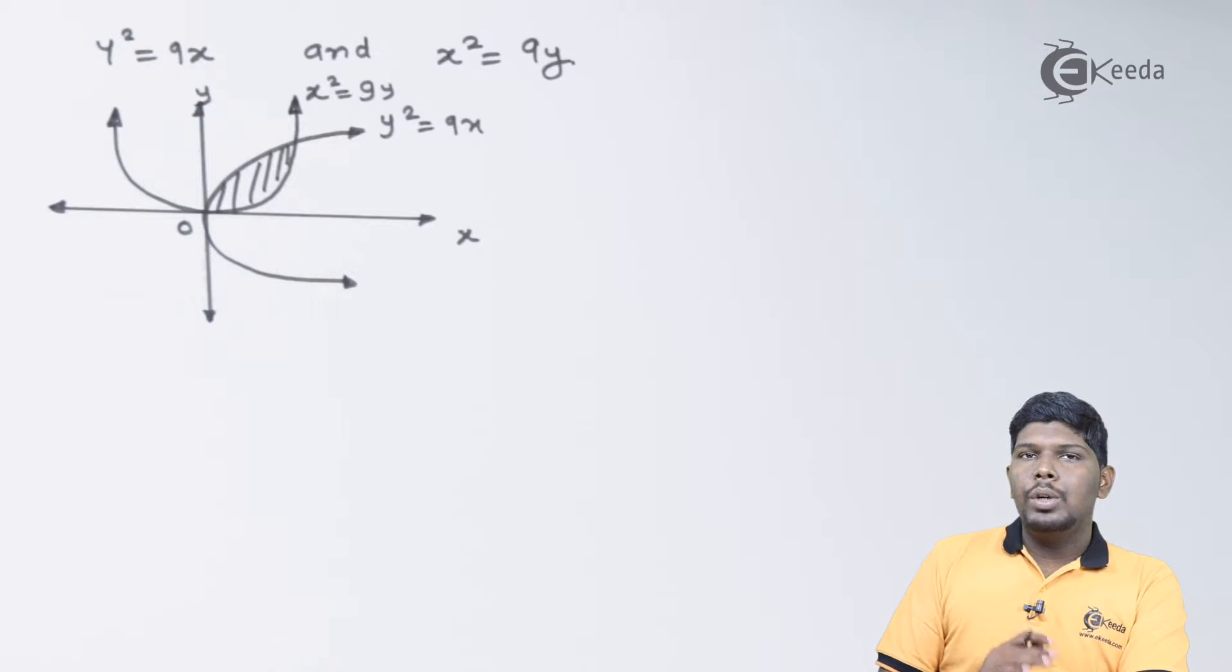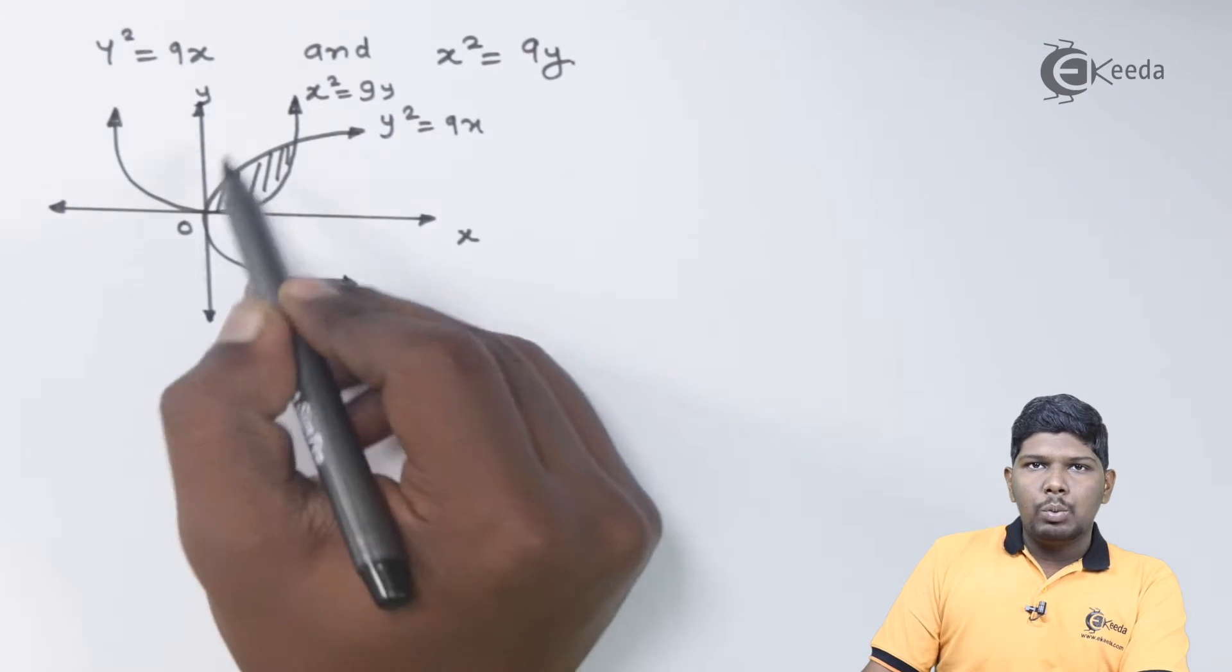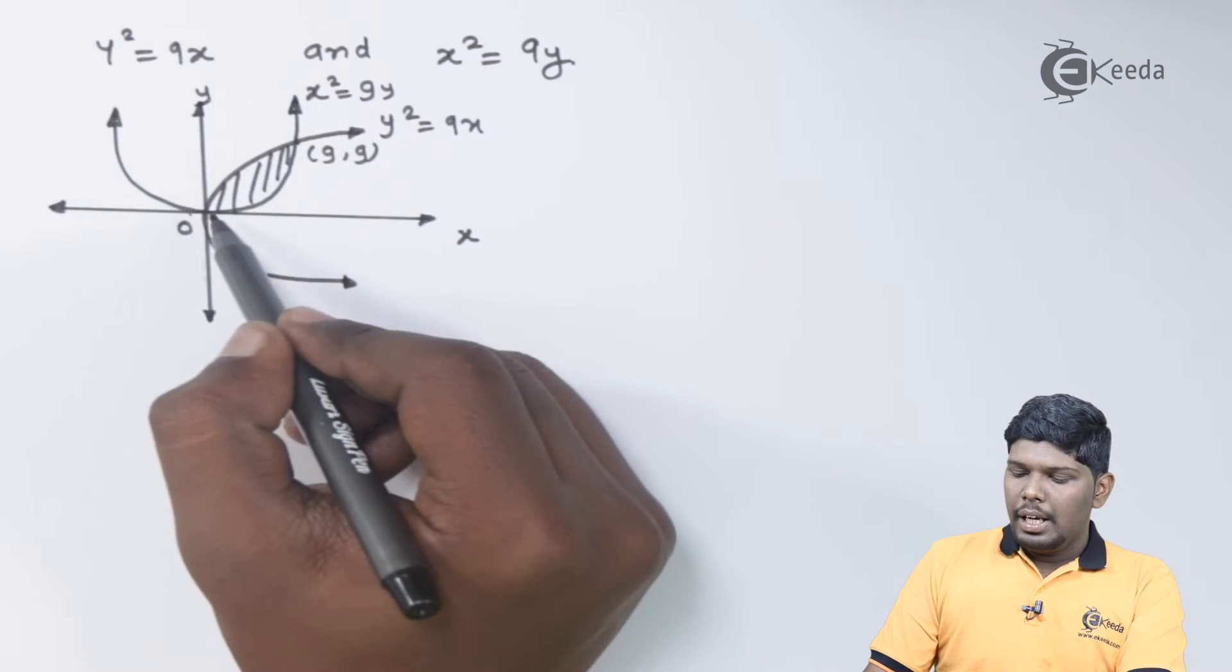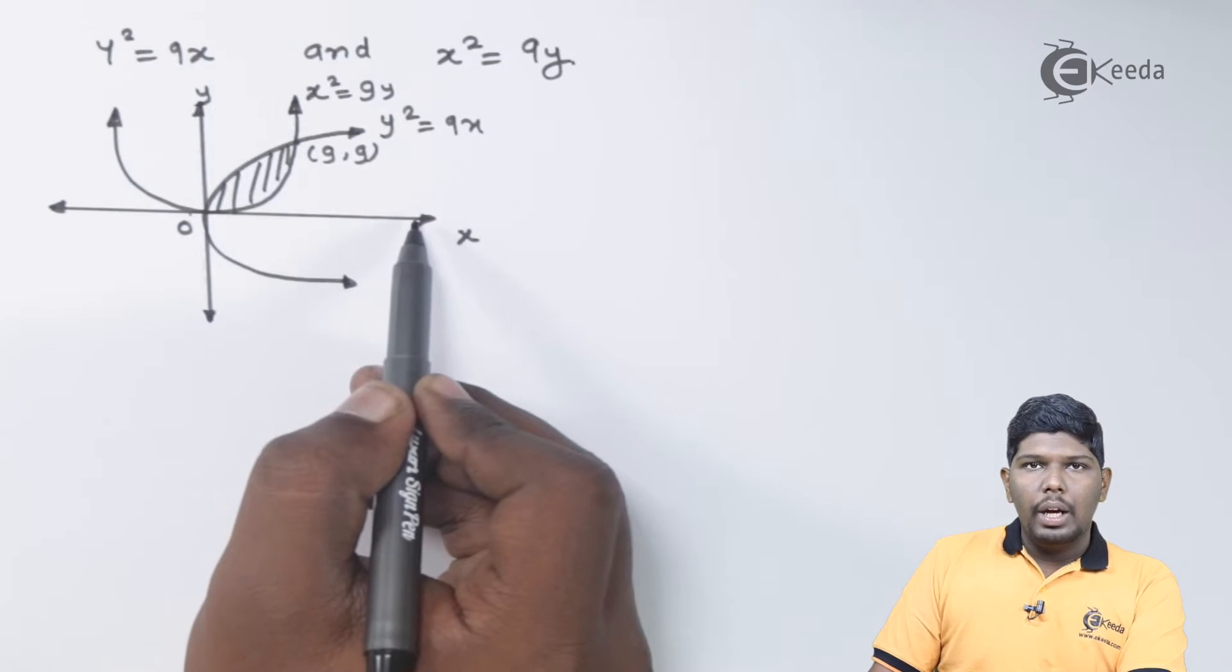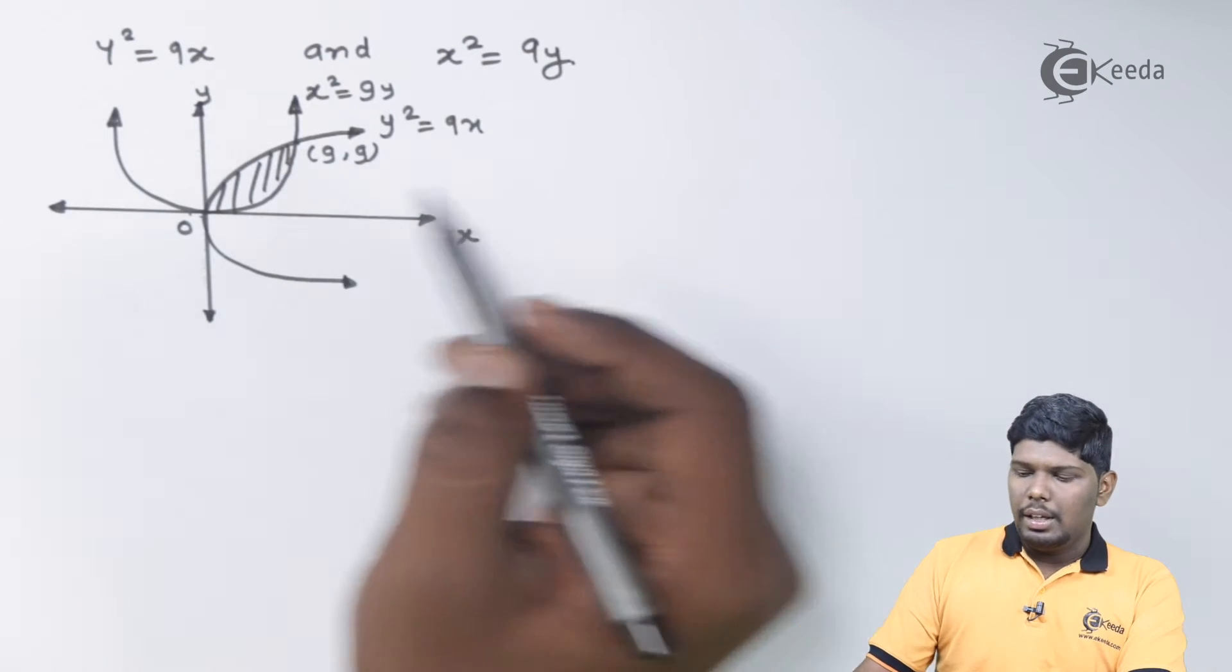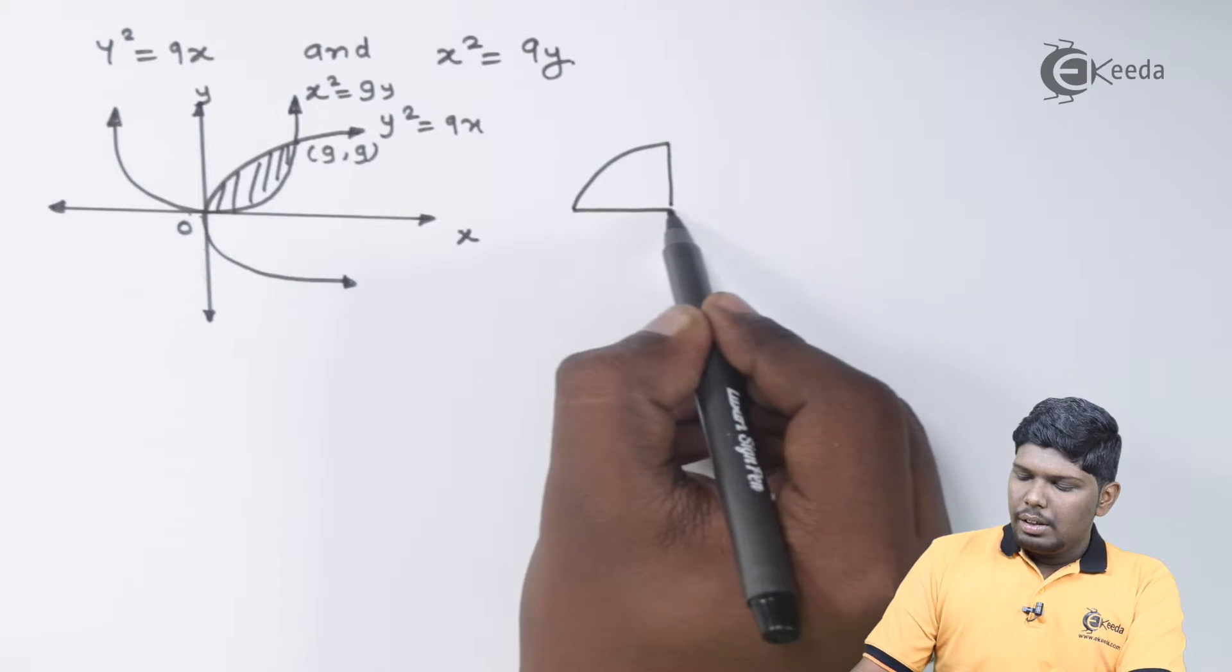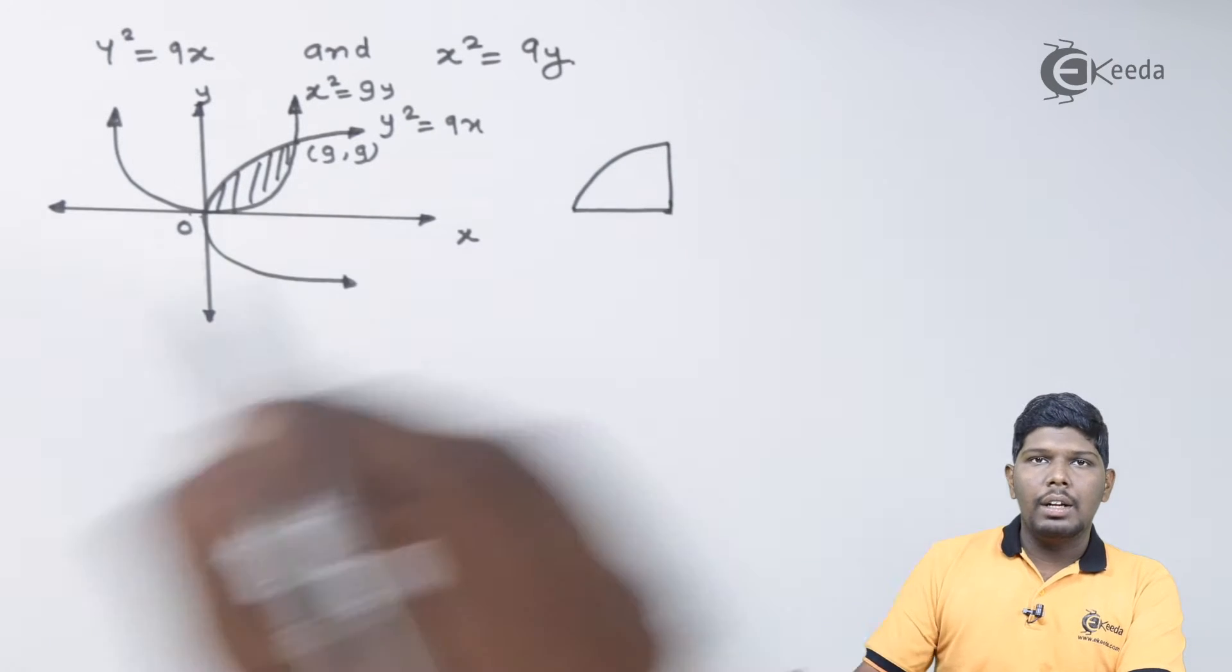Now remember, whenever you need to find area between the two parabolas, first you need to subtract both the areas which are formed by both the parabolas. As you can see, the first parabola y square is equal to 9x. Here the point of intersection will be 9 comma 9. If I find the area of this parabola y square is equal to 9x with respect to x axis from the point 0 comma 9, it will look like this shape. This will be the x axis and this will be the parabola and this will be the area under the curve.